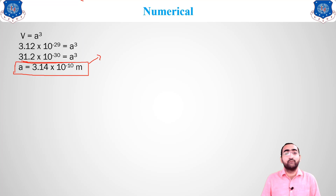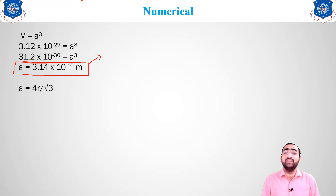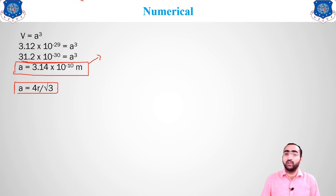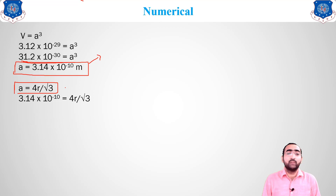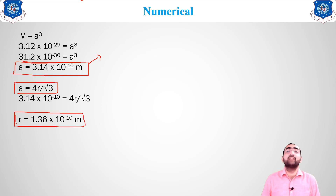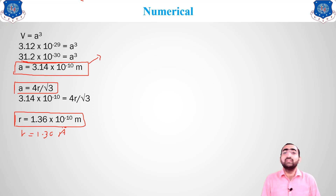We required two things: the radius and the side of the cube. The lattice parameter a is found. Now for the atomic radius in a BCC structure, the formula is a = 4r / √3. Placing a = 3.14 × 10⁻¹⁰ m and solving for r gives r = 1.36 × 10⁻¹⁰ m, which is 1.36 Angstroms. This is how we find the radius and lattice parameter from given data.